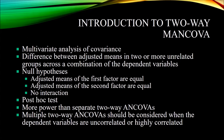Hello, this is Dr. Grande. Welcome to a video on an introduction to two-way MANCOVA. A MANCOVA is a multivariate analysis of covariance, and a two-way MANCOVA is a MANCOVA that has two independent variables. We use a two-way MANCOVA when we want to determine the difference between adjusted means in two or more unrelated groups across a linear combination of dependent variables, taking into account two independent variables or factors.